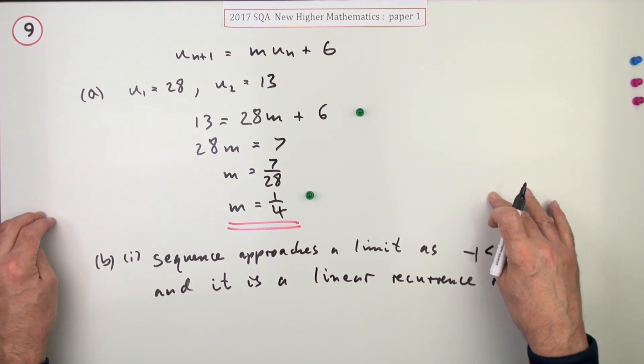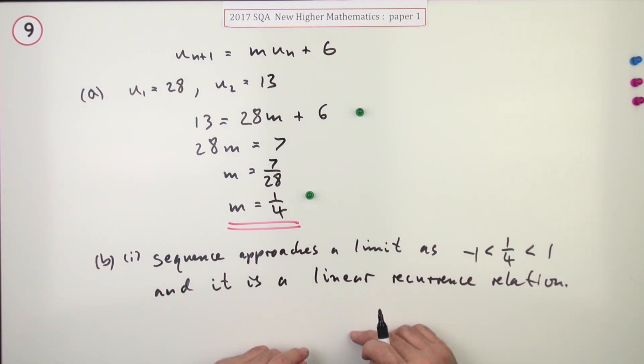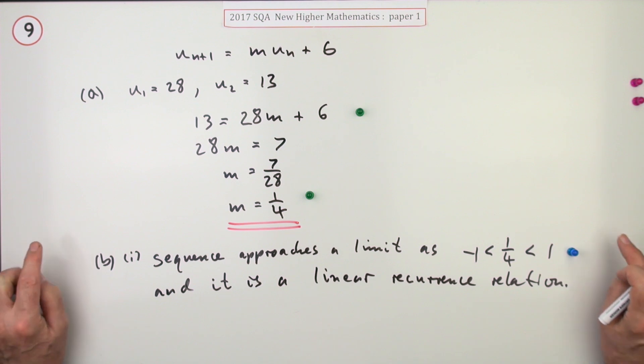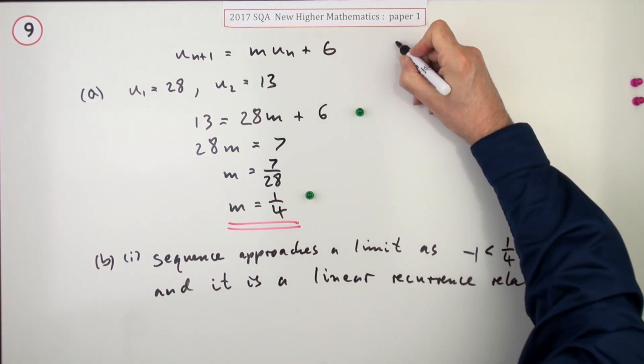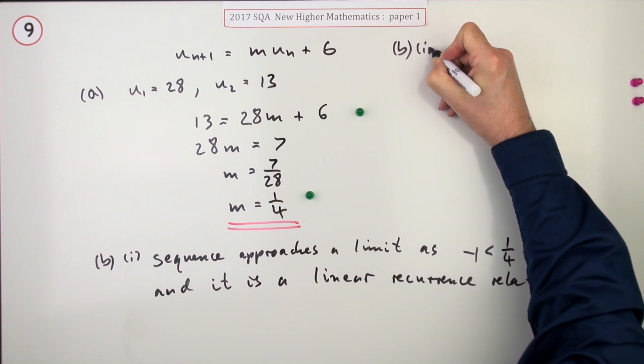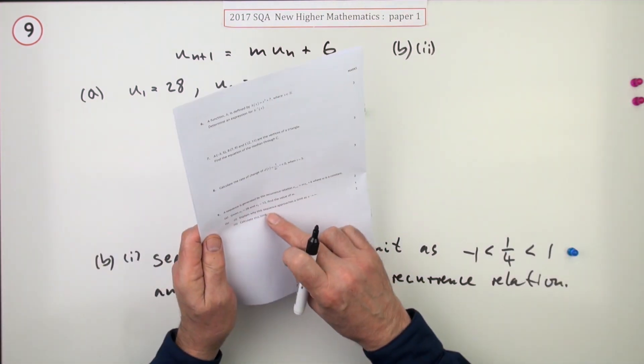And lo and behold, in this year's marking scheme, they say do not penalize if it doesn't put this further statement down. In other words, you just get the mark for doing that. However, I would just write it all out for safety because sometimes you just don't know what they're going to do in the marking scheme.